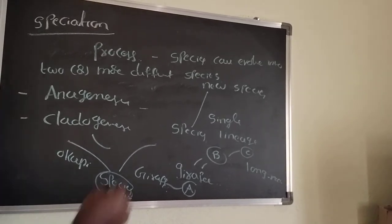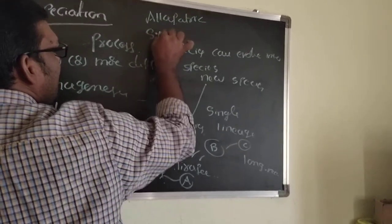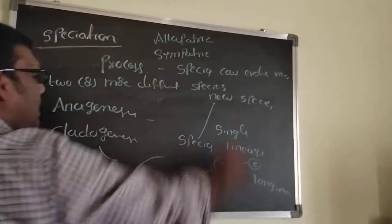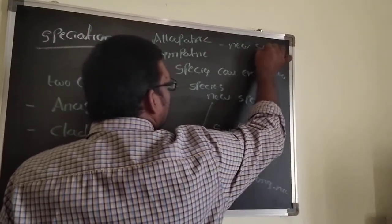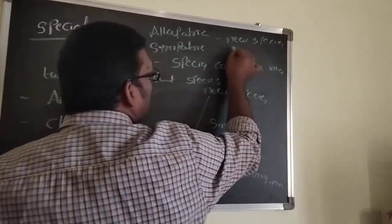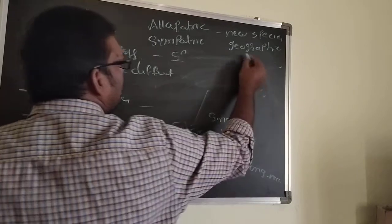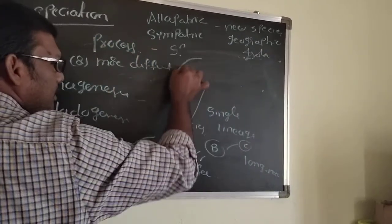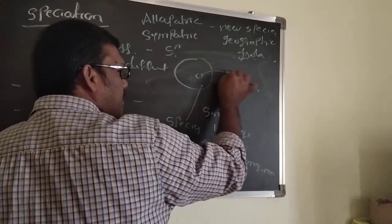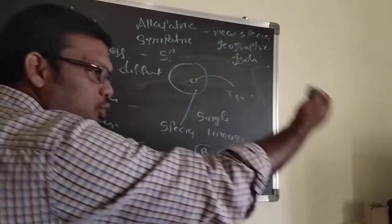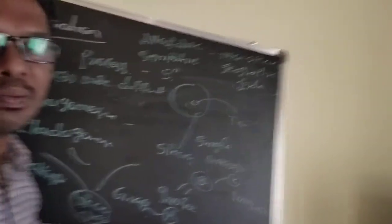Next, allopatric speciation and sympatric speciation. Allopatric speciation means a new species is formed due to geographical isolation — a species from the original population enters a new geographical area and forms a new species.